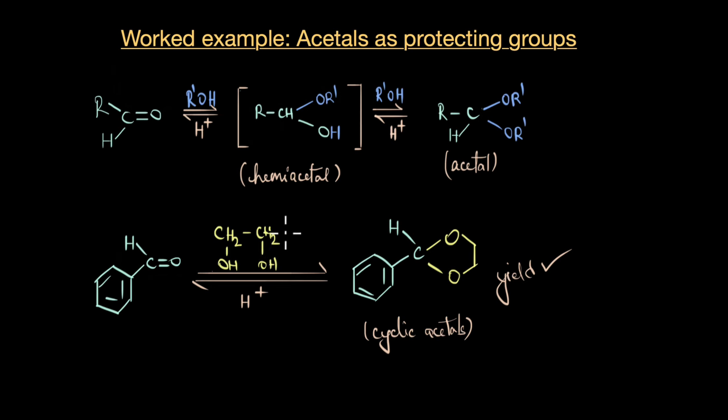So, clearly you can see why we prefer to use ethylene glycol in order to form acetals. Firstly, they form stable cyclic acetals. Secondly, the reaction conditions required is much milder. We need milder acidic conditions. And lastly, the yield is very good. Alright, so now that you know how acetals are formed, let's see how they act as protecting group in a typical organic reaction.